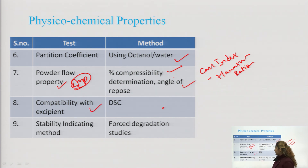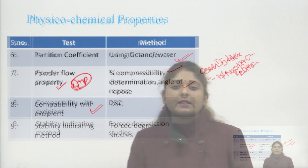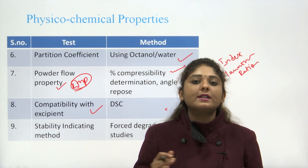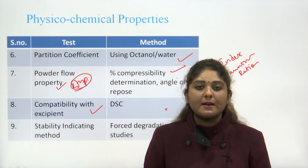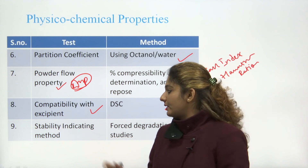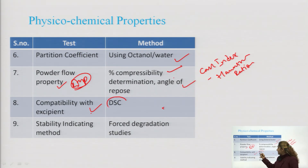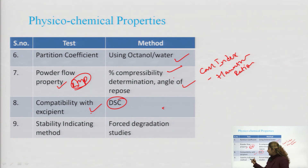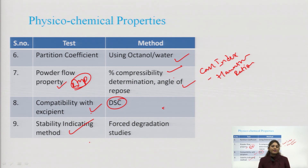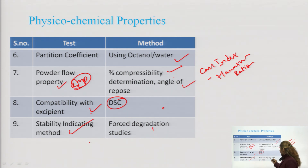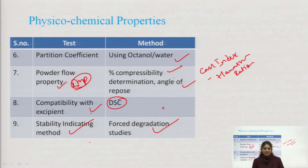Compatibility with excipients is checked using DSC (Differential Scanning Calorimetry) to determine drug-excipient compatibility. Next, the stability indicating method is used to check how the drug behaves under different conditions — this is done using forced degradation studies to assess the stability of the drug.